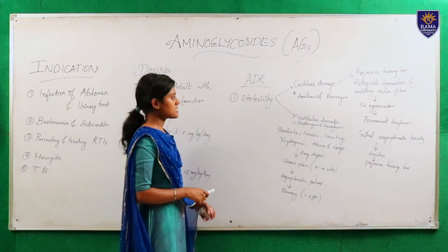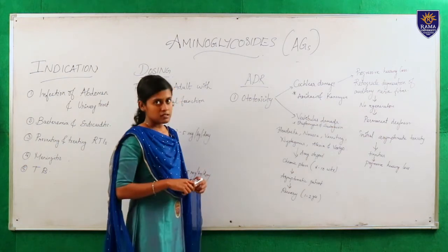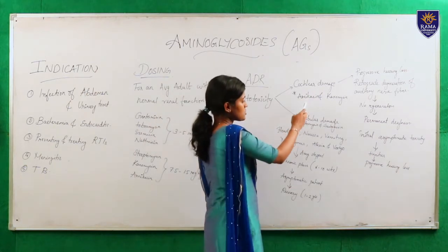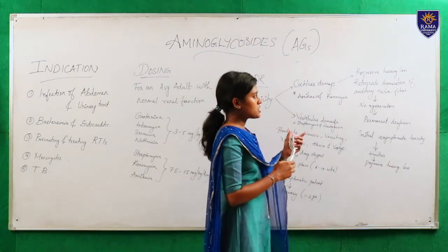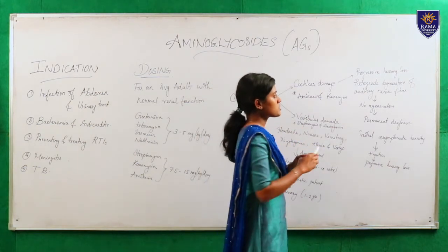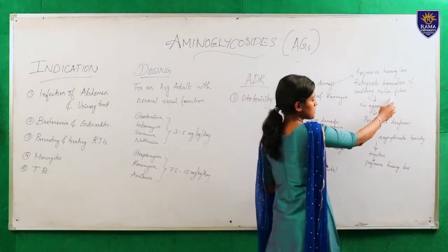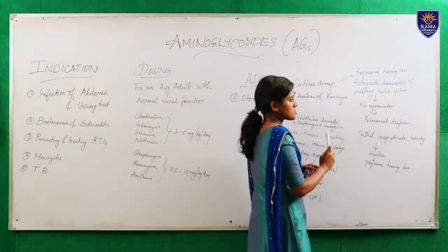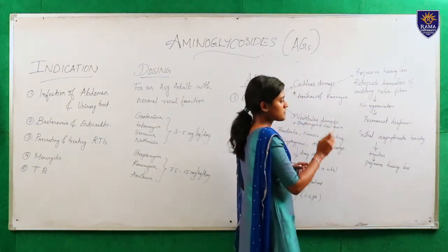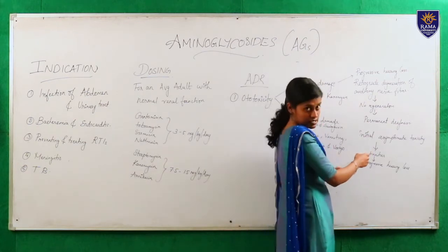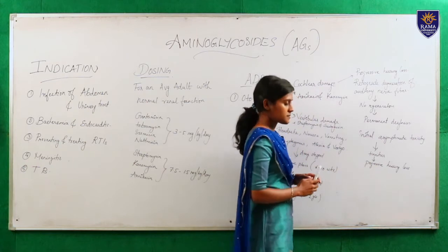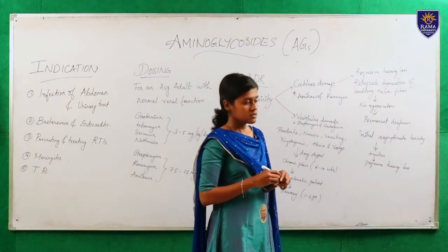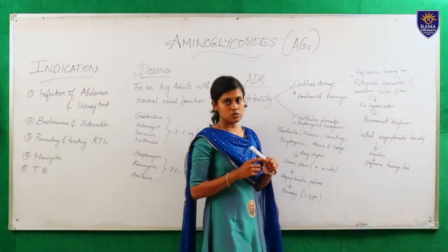Now we shall look at the ADRs of aminoglycosides. The first and foremost ADR is ototoxicity, which consists of cochlear damage and vestibular damage. Cochlear damage means there is progressive hearing loss due to retrograde degeneration of auditory nerve fibers, which leads to permanent deafness with no regeneration. Initially the patient may be asymptomatic to the toxicity, then tinnitus occurs — buzzing in the ear — which leads to progressive hearing loss. This stage may last 2-4 weeks.